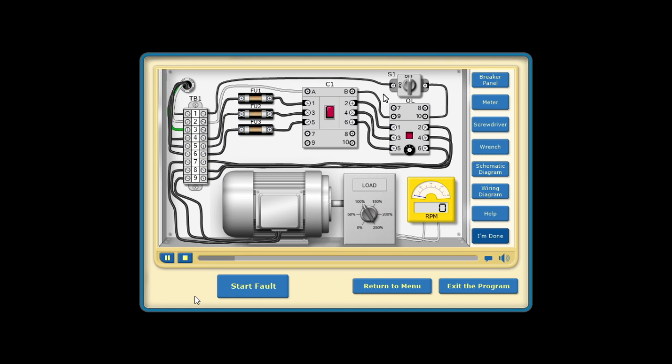To start the motor, click on the control switch. The speed of the motor is shown on the RPM gauge.